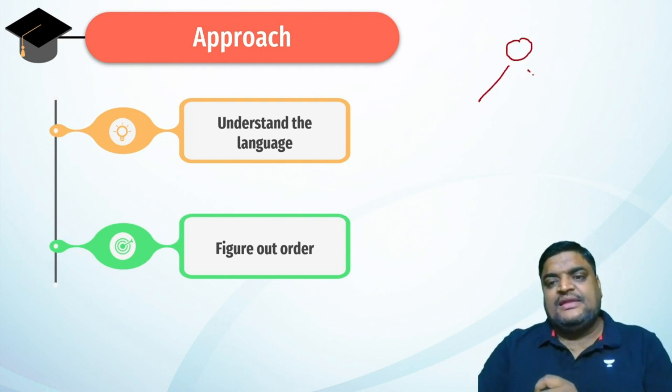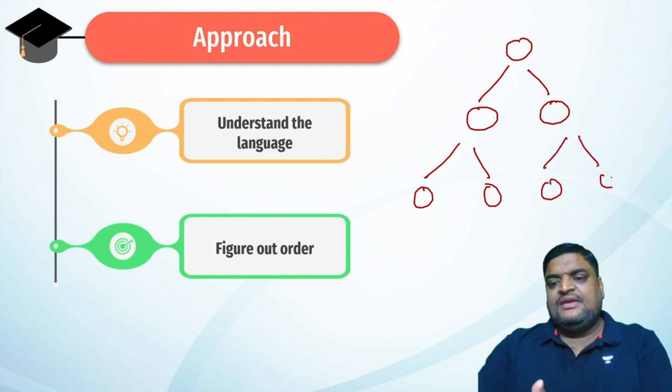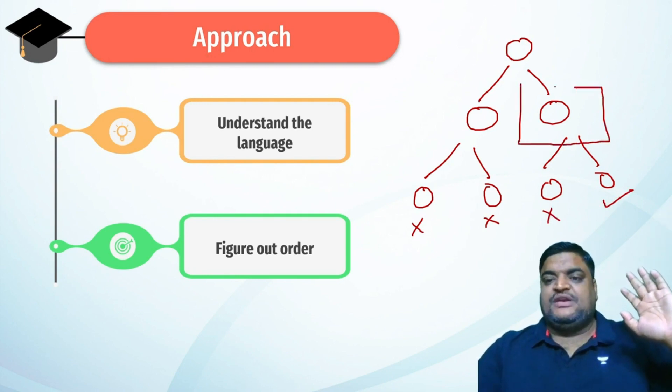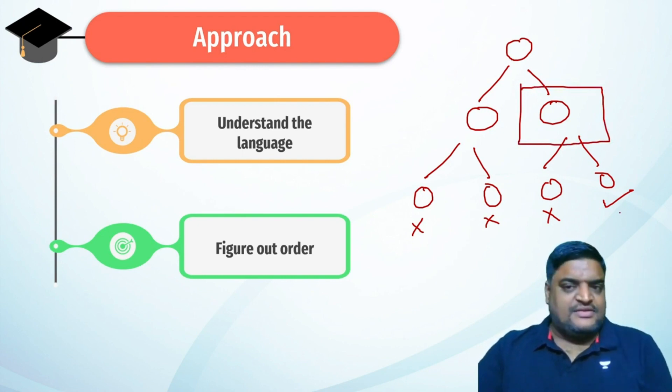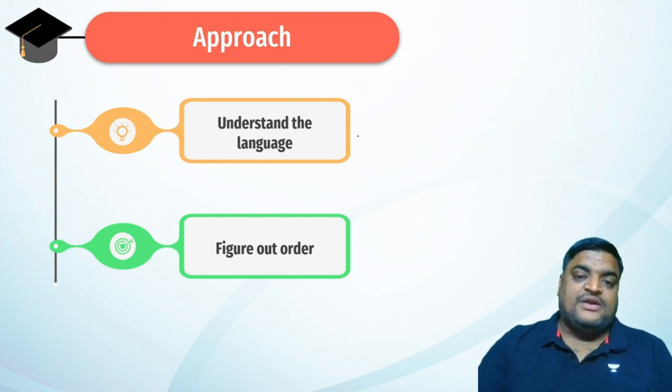Suppose this is the first possibility and it further divides into two possibilities, and again you have two possibilities each from both of them. Assume this is wrong, this is wrong, this is wrong, and this is the correct answer. If you have missed this possibility, you would have never gotten an answer. Missing a possibility is a crime in logical reasoning - you cannot afford to miss any possibility.